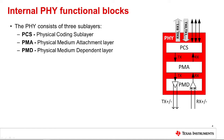The physical medium attachment sublayer, or PMA, provides functions for bit-to-symbol mapping, determining link status, clock recovery, and detecting error events. The physical medium dependent sublayer, or PMD, implements the functions that support the PHY's physical connection to the network, whether it is copper or fiber.